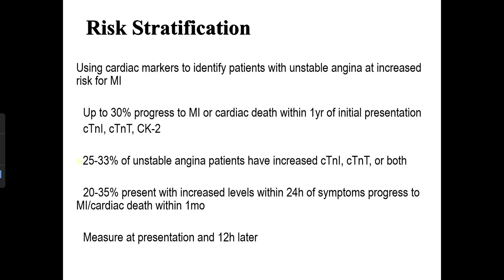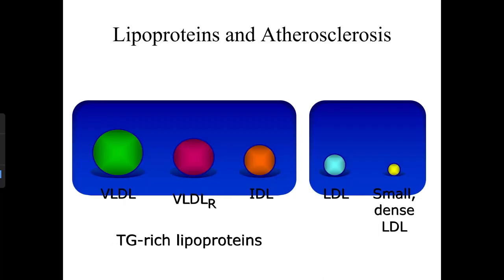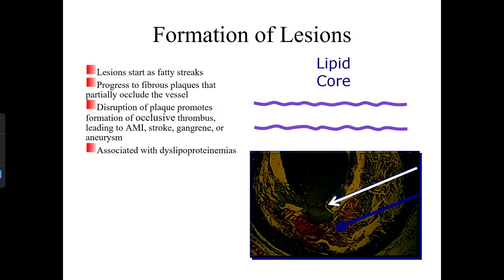Lipoproteins and atherosclerosis: lesions start as fatty streaks, progress to fibrous plaques that partially occlude the vessel. Disruption of the plaque promotes formation of an occlusive thrombus, leading to acute myocardial infarction, stroke, gangrene, or aneurysm.